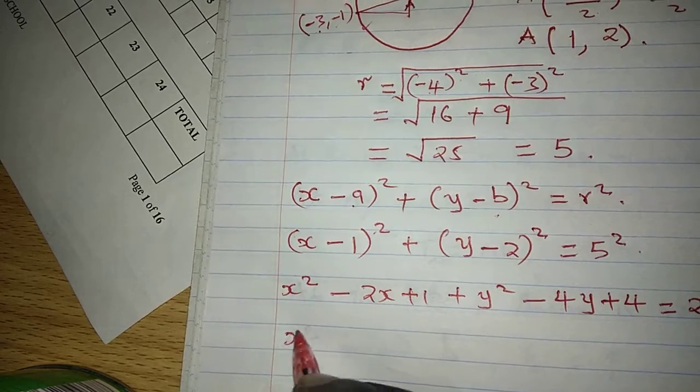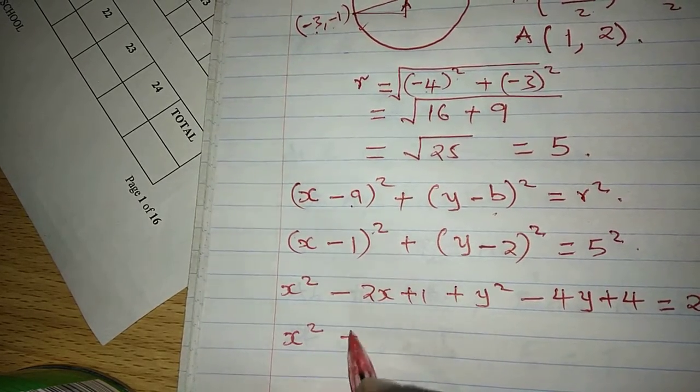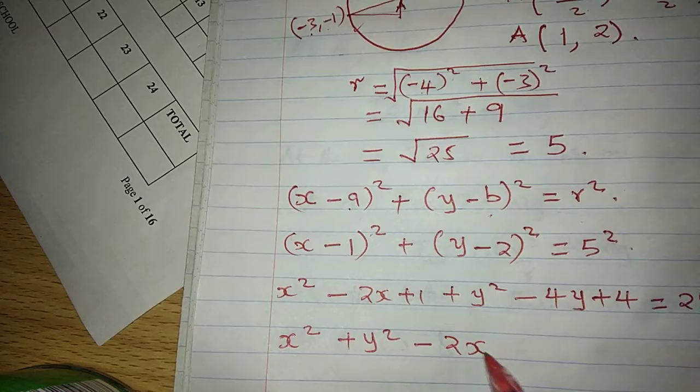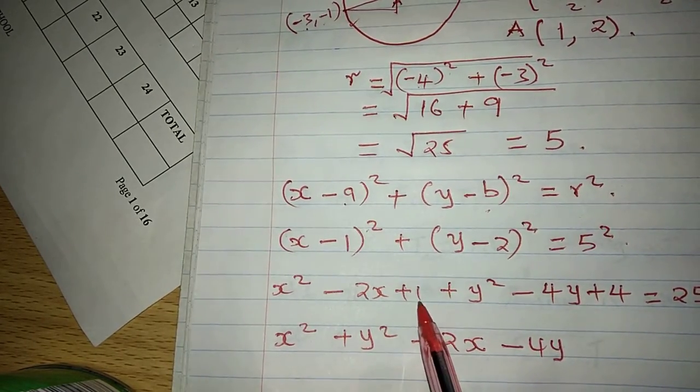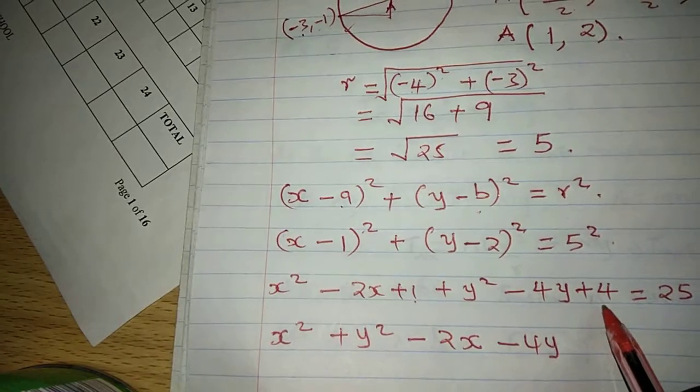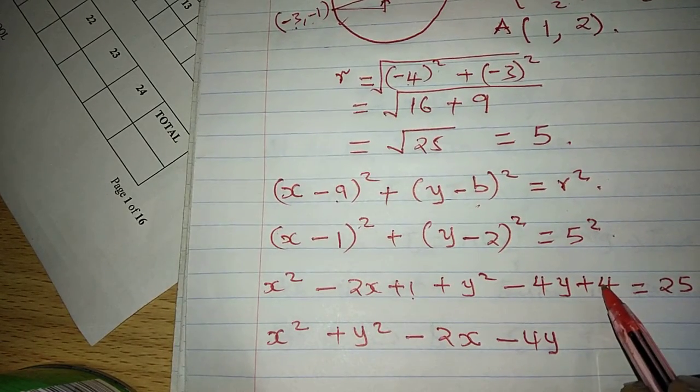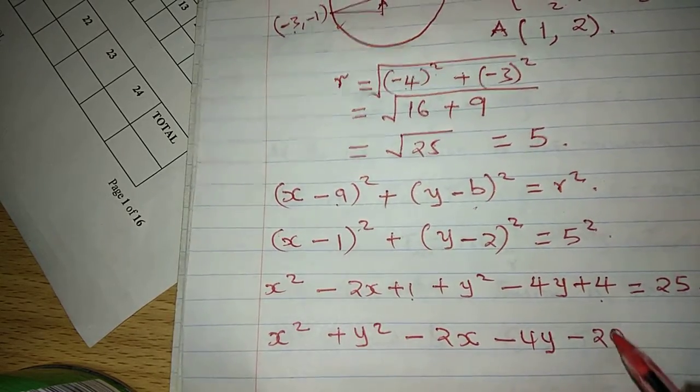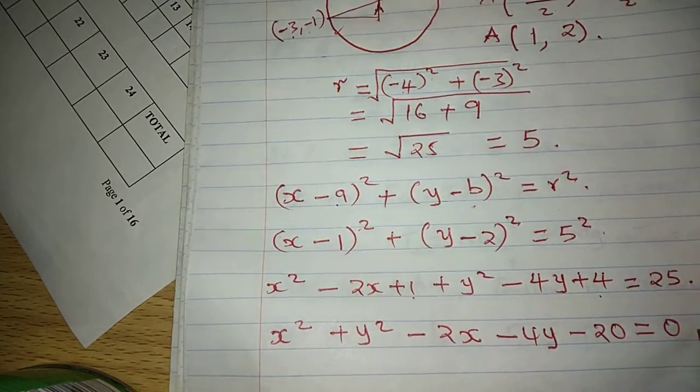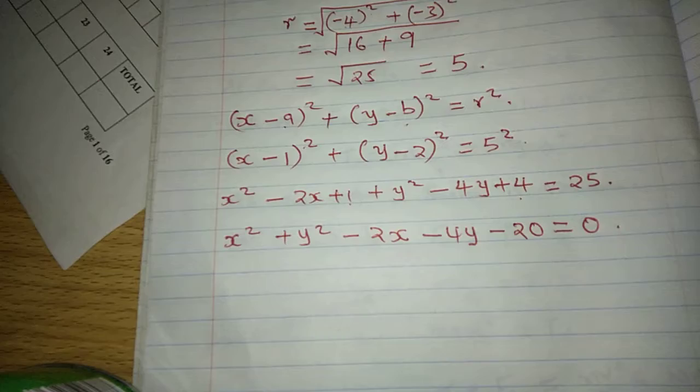we can start with the term containing x² such that we have x² + y² - 2x - 4y, then we will have 1 and 4 becoming 5, and we have -25 coming to this side, such that we have 5 - 25 which gives us -20, equals 0.